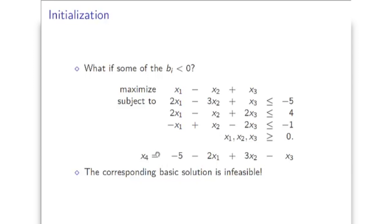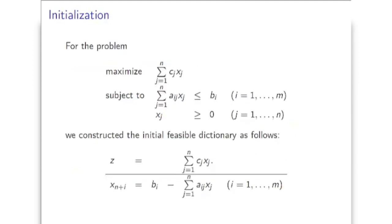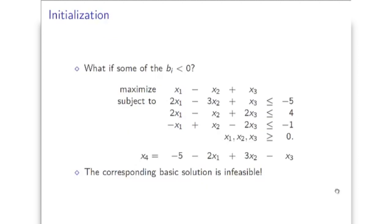So when we introduce the slack variable for the first constraint, for example, we have negative 5 here. So if we set all the non-basic variables to 0, then as a result we'll obtain x4 equal to minus 5, and we cannot have negative values for the variables. Remember, one of the key assumptions is that all the variables are always non-negative when we consider the simplex algorithm for linear programs.